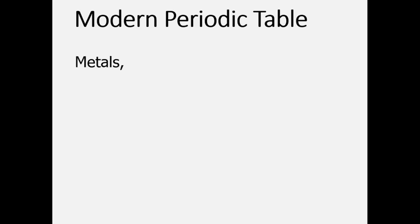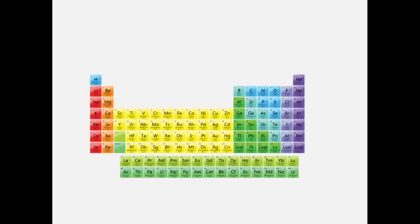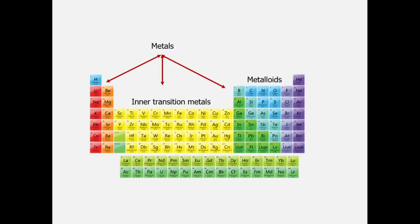In modern periodic table, the elements are divided into 3 categories: metal, non-metal, and metalloid. Metals include alkali metals, alkaline earth metals, aluminum, and inner transition metals. Non-metals include carbon, nitrogen, oxygen, etc. Metalloids are in between. Noble gases are also non-metals.